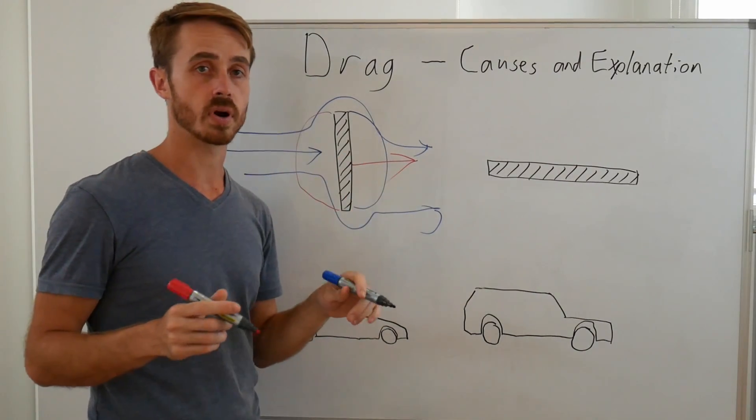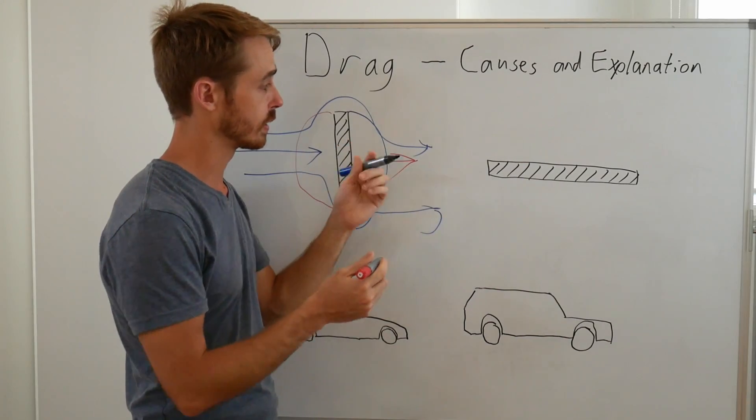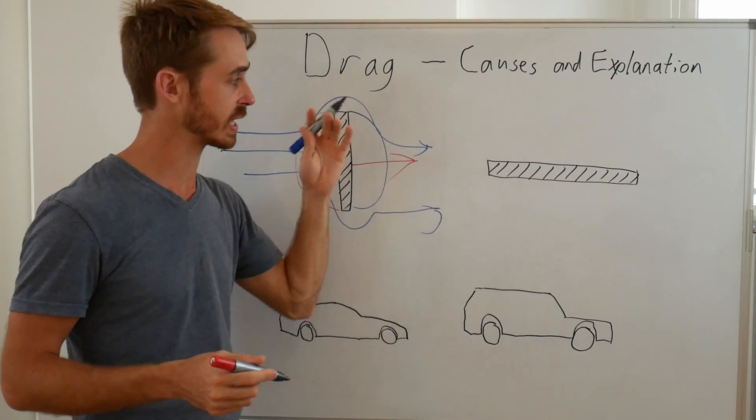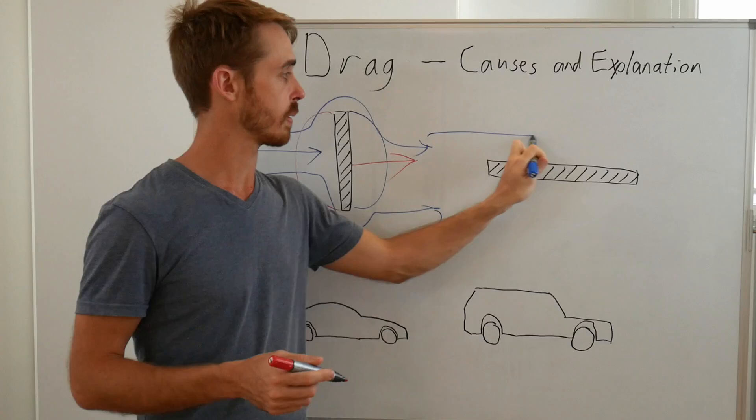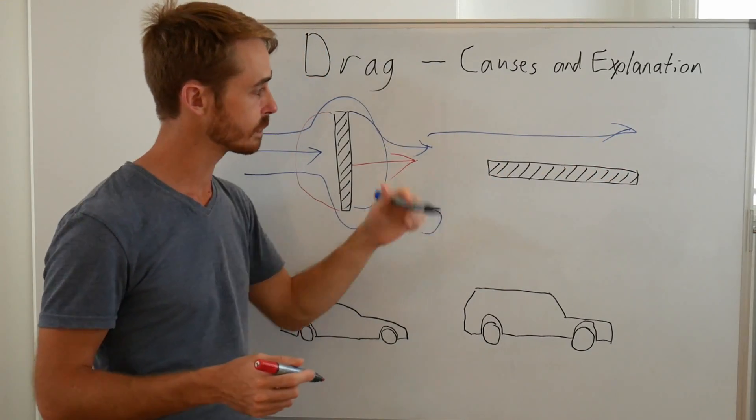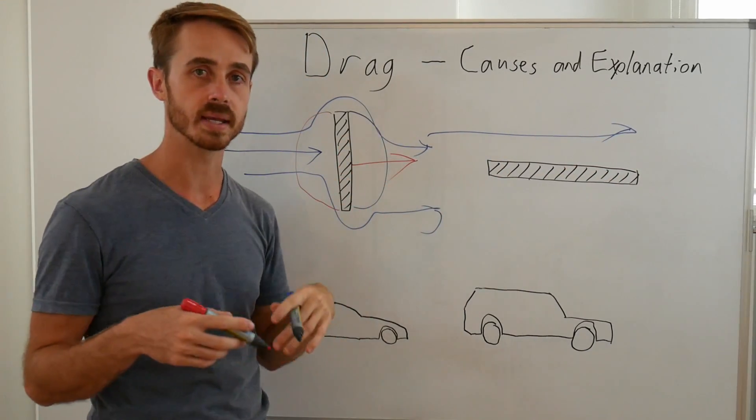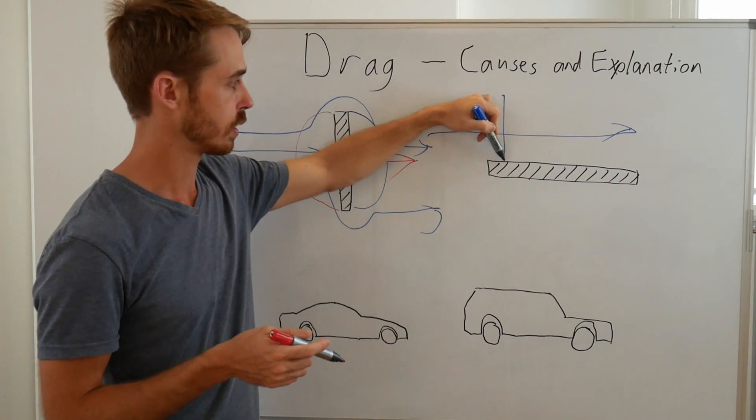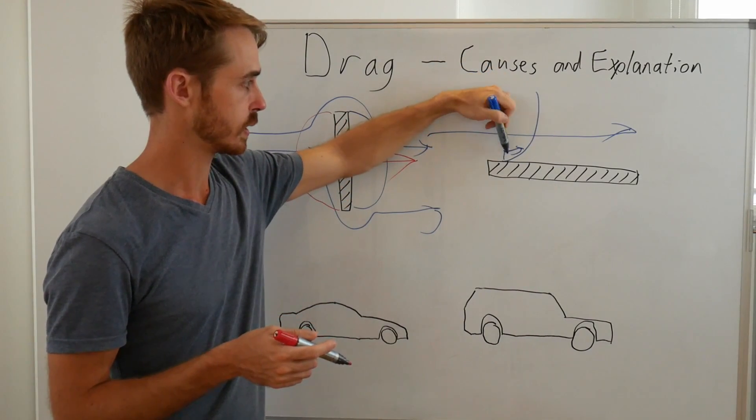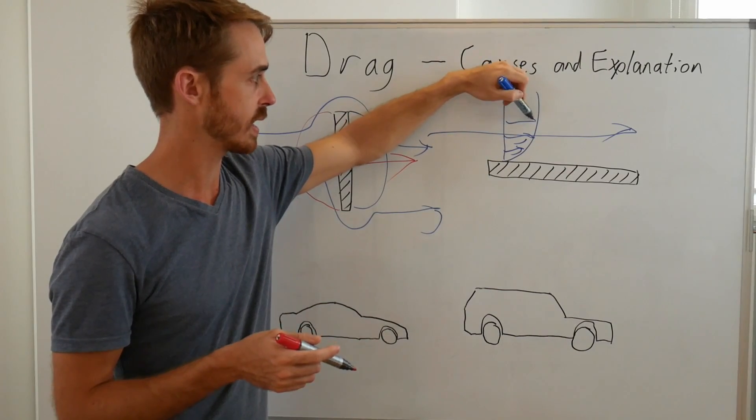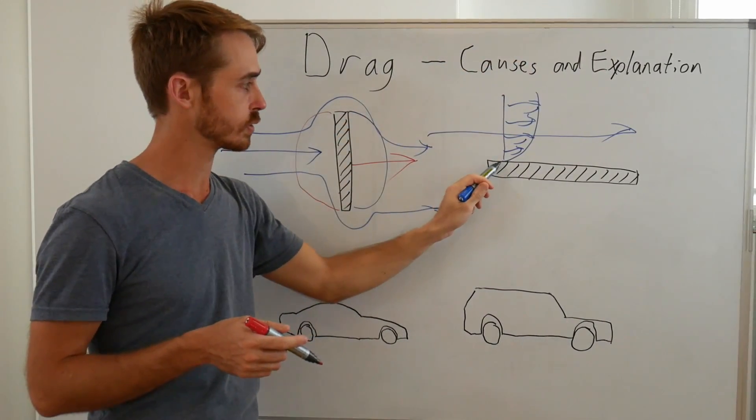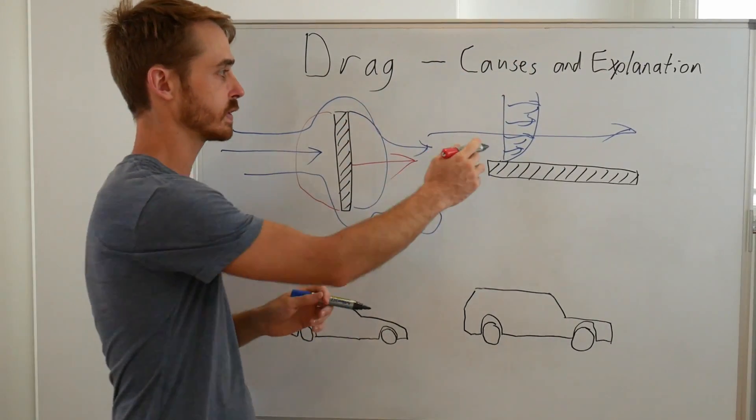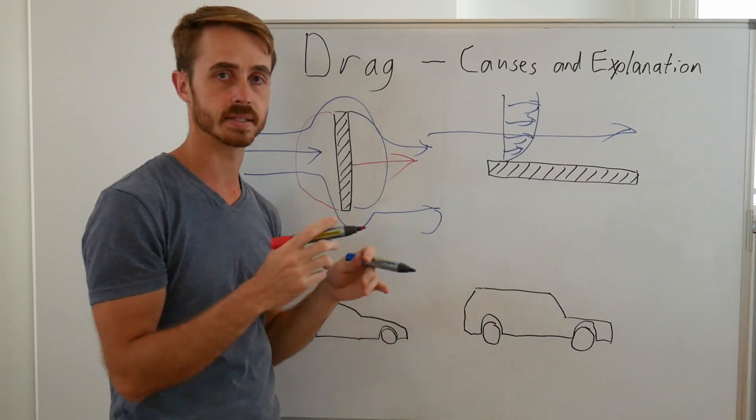Now the other type of drag is known as viscous drag. So basically if you imagine we've instead got a plate this way and we have our air blowing across there, we end up generating a boundary layer across the surface. So the velocity profile along here will be like that and you'll end up with the flow stationary at the surface and then gradually accelerating out to the free stream.